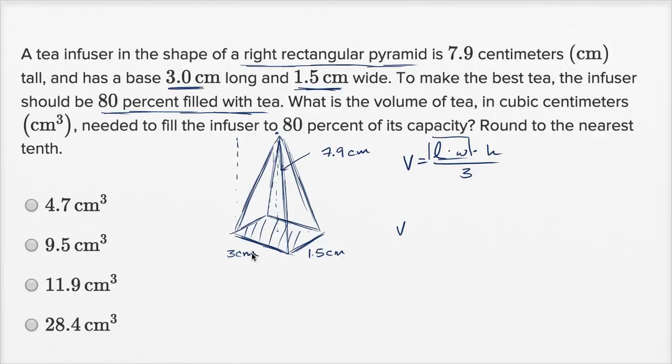And so this is going to be length 3 centimeters times width of 1.5 centimeters times height of 7.9 centimeters divided by three. Well, this three, three divided by three is just one. And let's see, you have centimeters, this is centimeters right over here, divided by three.